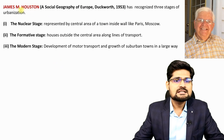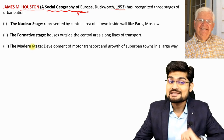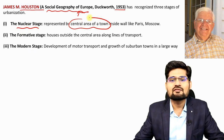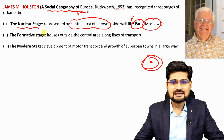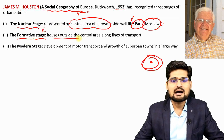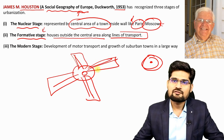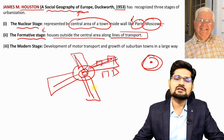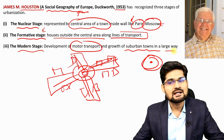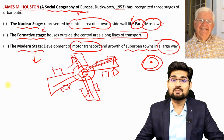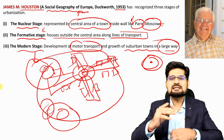Scholar James Houston wrote a book on Social Geography of Europe in 1953 and recognized three stages of urbanization. The nuclear stage is represented by a central area of town inside a wall, like Paris or Moscow. The formative stage saw houses developing outside the central area along lines of transport — new townships were created along road networks radiating from central areas. The modern stage involves the development of motor transport and growth of suburban towns, with multiple centers and multiple townships in a network.